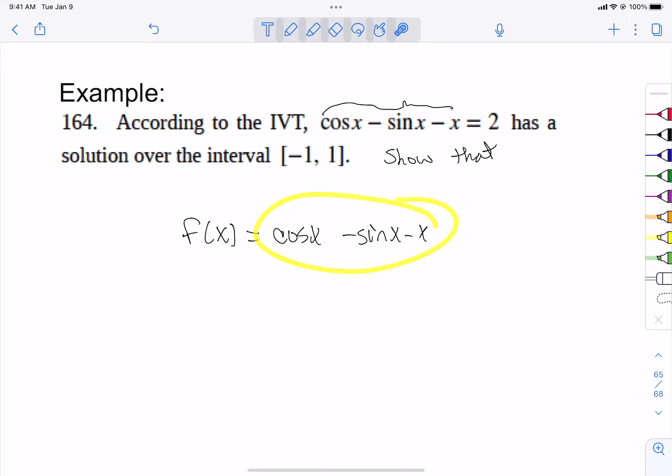So how do we check it? Well, is it continuous? Well, yeah, a cosine is continuous everywhere, a sine is continuous everywhere, and x is continuous everywhere. So if you add them in or subtract them or whatever, guess what? It's continuous.